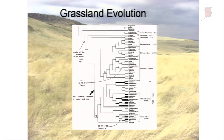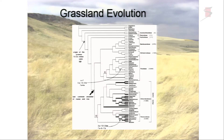This pattern of macroevolutionary lags is actually widespread. One of the best examples is the evolution of grasses. Grasses are not widespread until about 25 million years ago in the fossil record, but based on molecular clock data, grasses evolved between 70 to 75 million years ago. So there's actually a long history of grasses before you see them ubiquitously as grasslands in the fossil record.